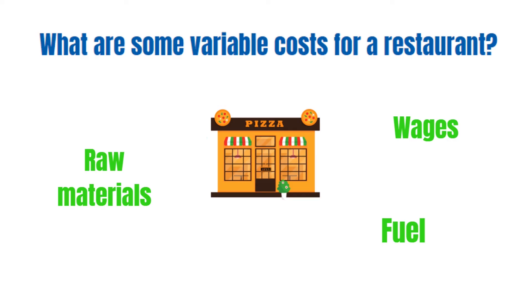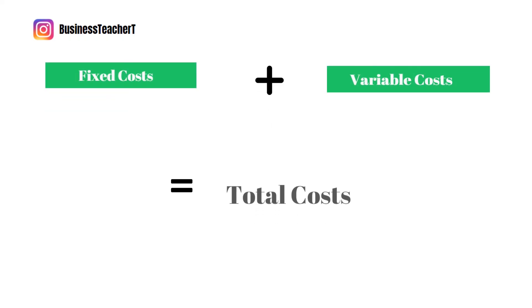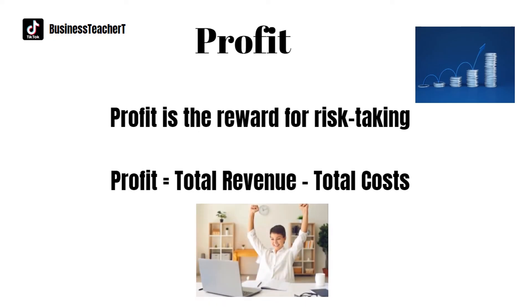It's quite important that you remember this: fixed costs plus variable costs equals total costs. Profit is the reward for risk taking. There are different types of profits, such as gross profit and net profit. You'll find the gross profit video in the description bar, and the net profit video will be released soon — please subscribe and click the notification bell so you're aware of when it is released. Profit equals total revenue minus total costs.